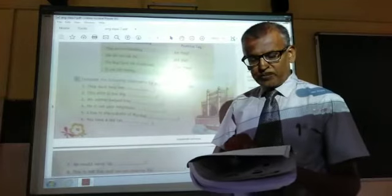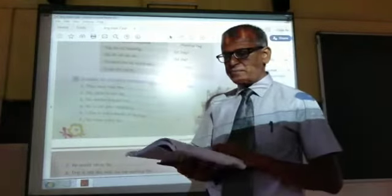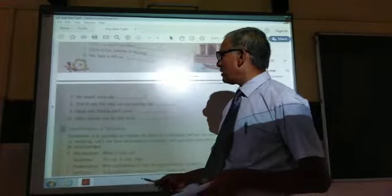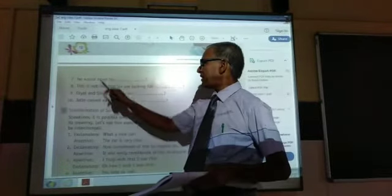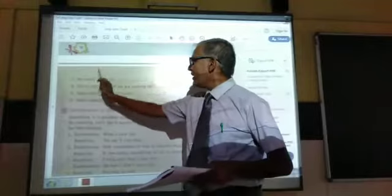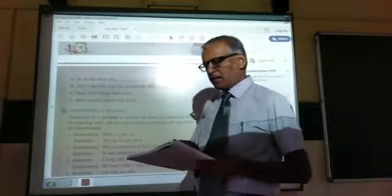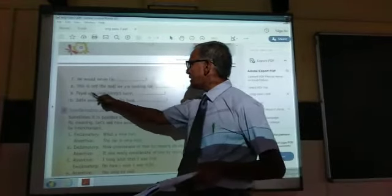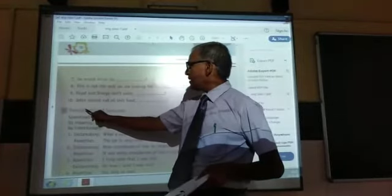Question five: 'I live in the suburbs of Mumbai' — don't I? Question six: 'You have a red car' — haven't you? Question seven: 'He would never lie.' 'Never' makes it negative, so the tag is positive — would he? Question eight: 'This is not the mall we are looking for' — is this? Question nine: 'Payal and Sriya don't swim' — do they? Question ten: 'Jatin cannot eat all this food' — can he?